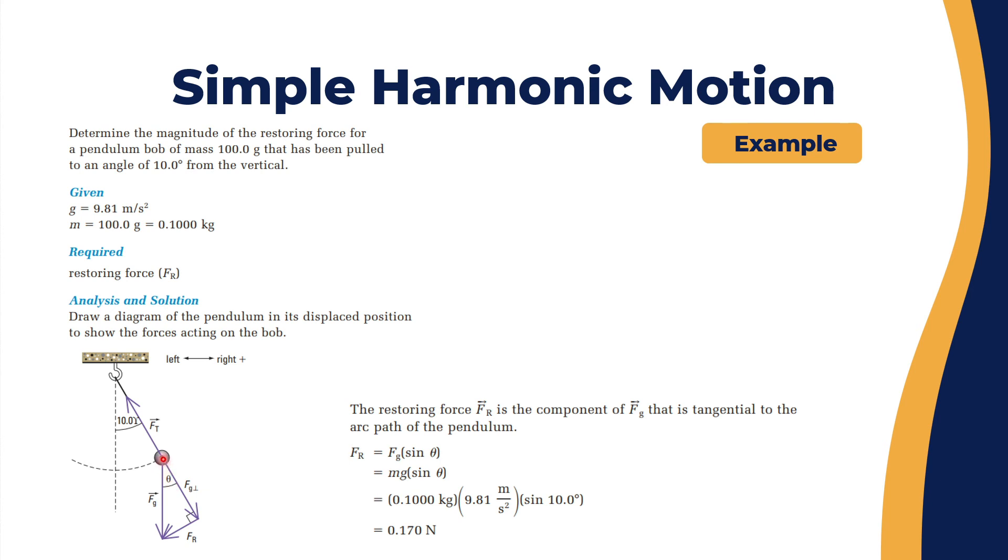For analysis, you do a free body diagram. When it's at the highest point to the right, restoring force pulls to the left. After analyzing, F gravitation perpendicular is this way, this is F gravitation normal, this is F return. With force vector analysis and theta, the F return equals F gravitation sine theta. That's mg sine theta: 0.1 kilograms times 9.81 times sine 10 degrees, which gives you 0.17 newtons.